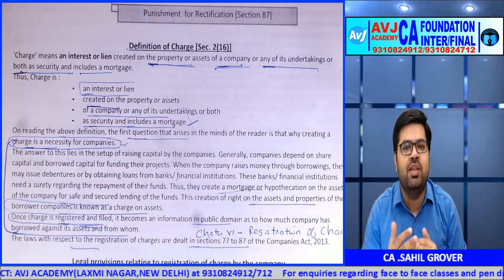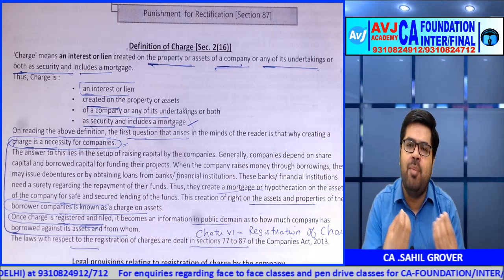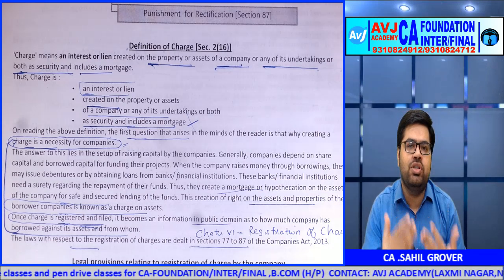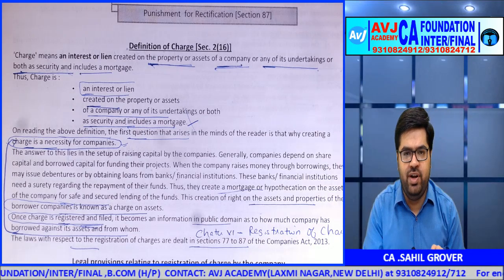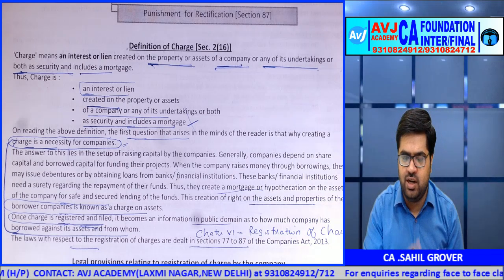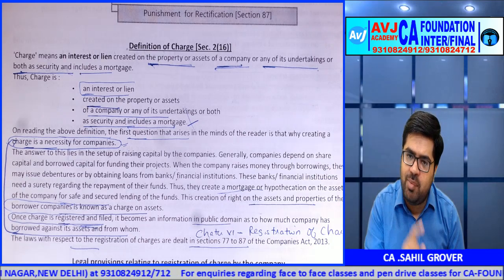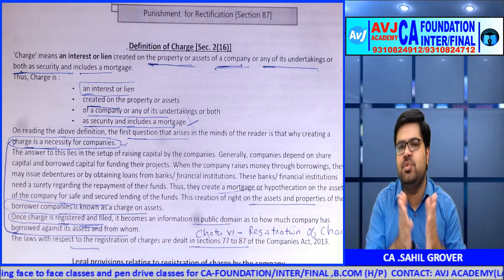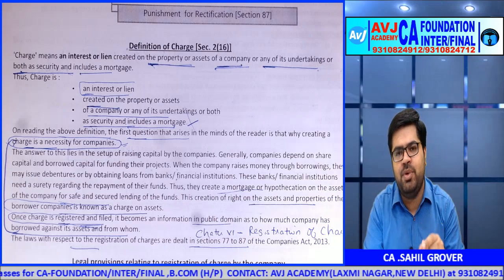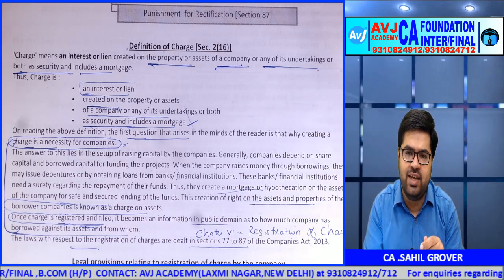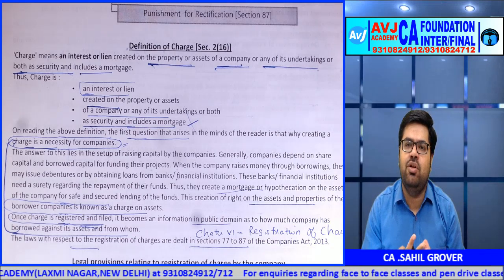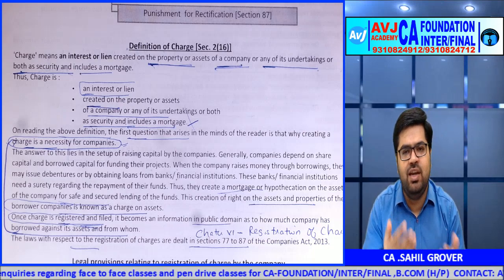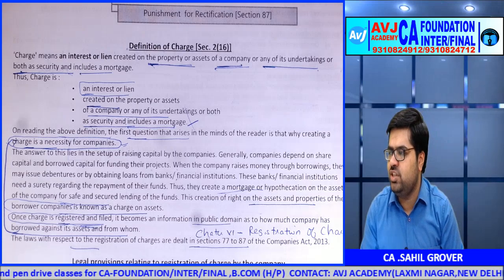Secondly, if you do not register the charge, when a liquidator is appointed and the company becomes insolvent, and the creditor — say Punjab National Bank — comes to claim its money, the liquidator can refuse to recognize the unregistered charge. He will say this charge does not exist in his view. You may still be an unsecured creditor and will still receive money, but as an unsecured creditor, not a secured one. This is a problem because secured creditors are paid first. So registration is important for two reasons: public notice, and recognition by the liquidator.